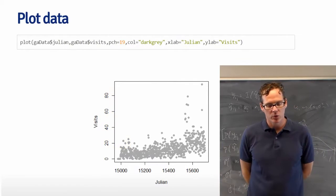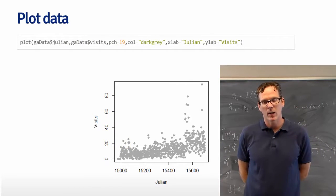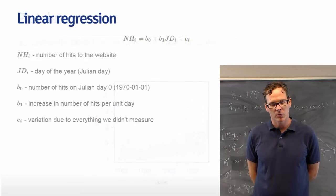Here's a plot of the data set. The Julian date is on the x-axis, and the number of visits is on the y-axis.